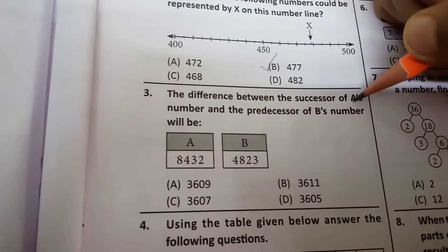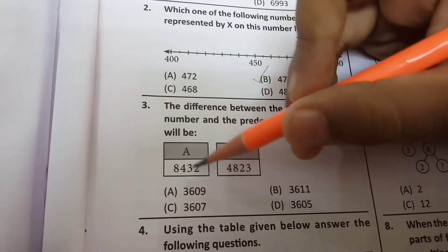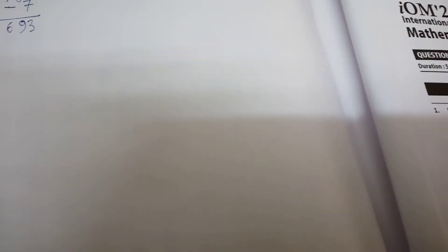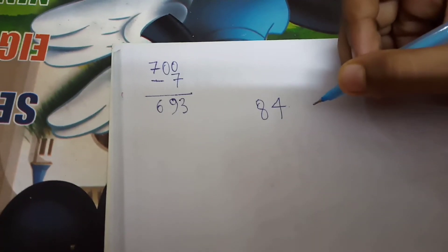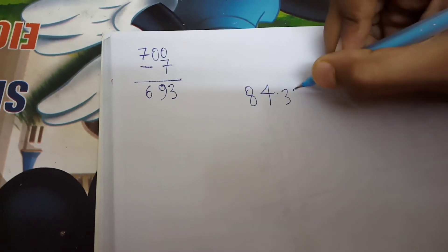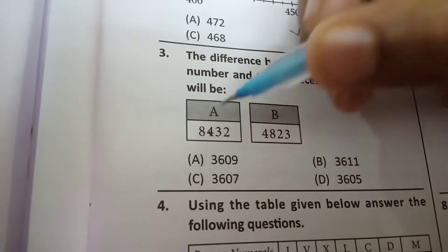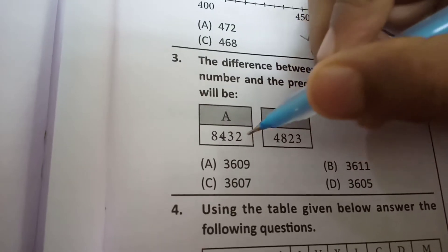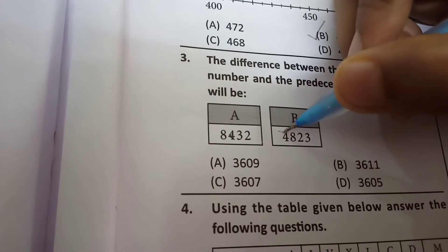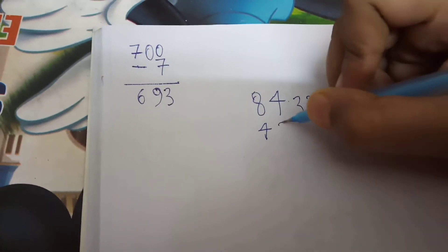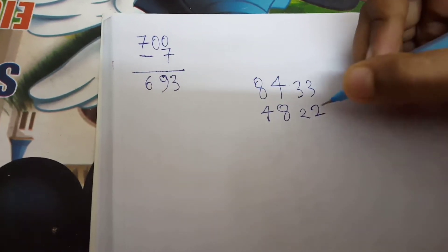So successor of A's number is, look, the successor of A's number will be 8,433. Because look, here it is showing 8,432. So the number that comes right after it is 8,433. Now the predecessor of B's number, 4,822.